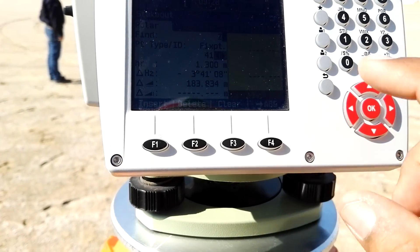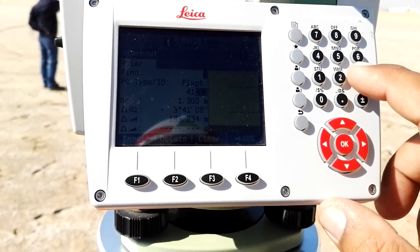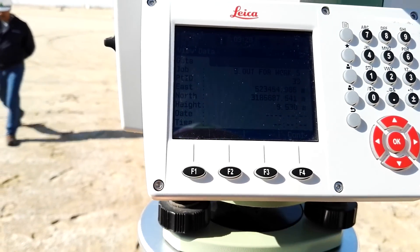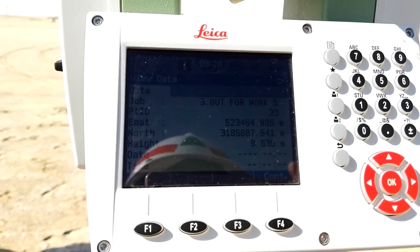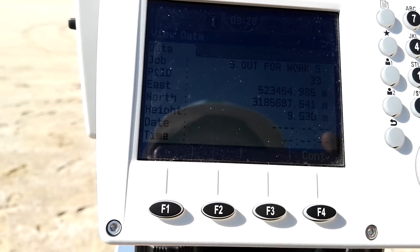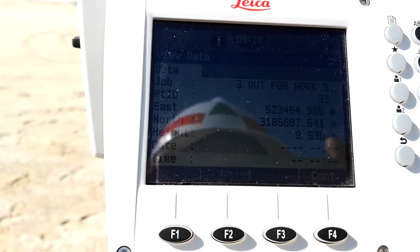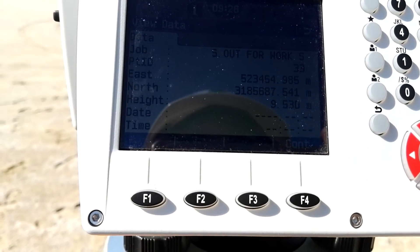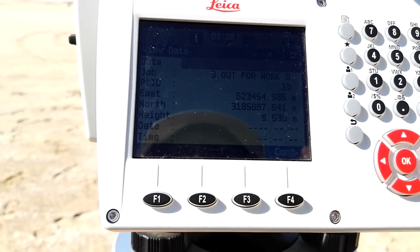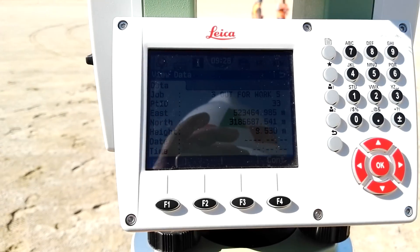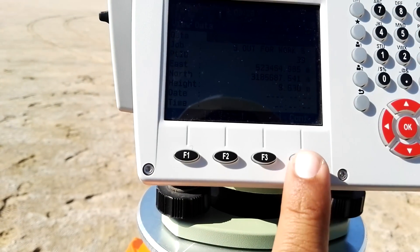And here I have point 33. As you can see on display, this is the first one is job name and second is the point ID that is 33 ID and then there is east, north and then height. And then there is date and time. So I will press F4 to continue.